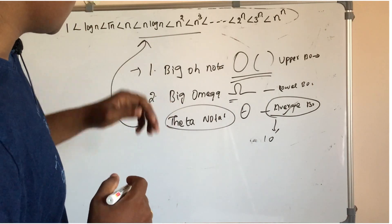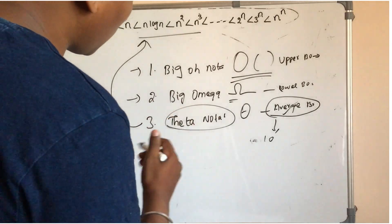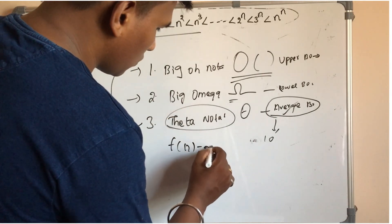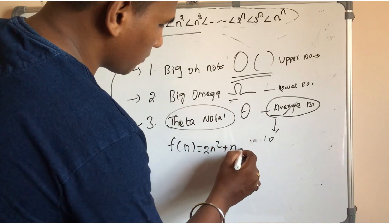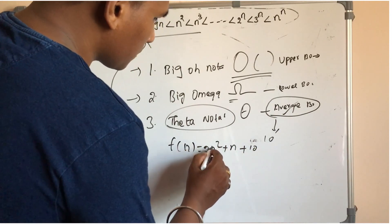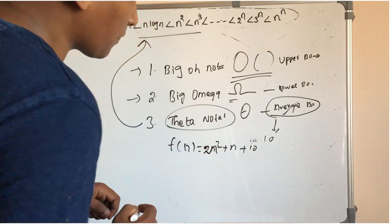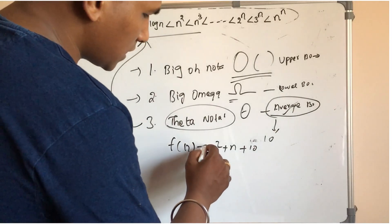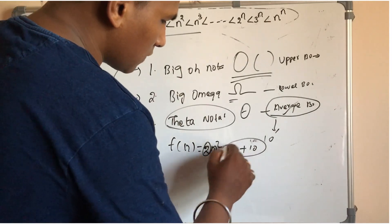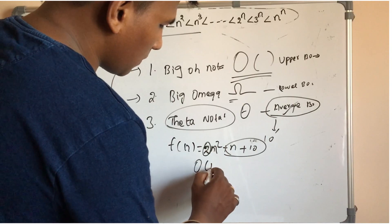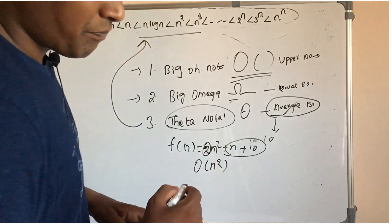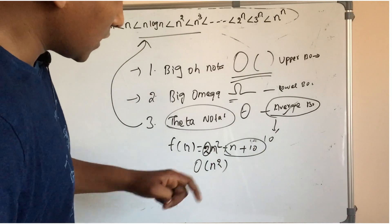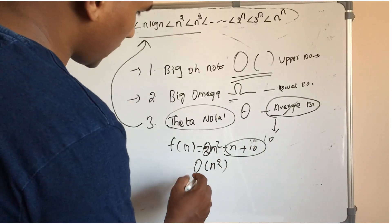For example, the theta notation with function 2n² plus n plus 10. You can represent the highest coefficient. You can remove the constant. You can remove the remaining lower-order terms. That is the time complexity — you can represent it as n².